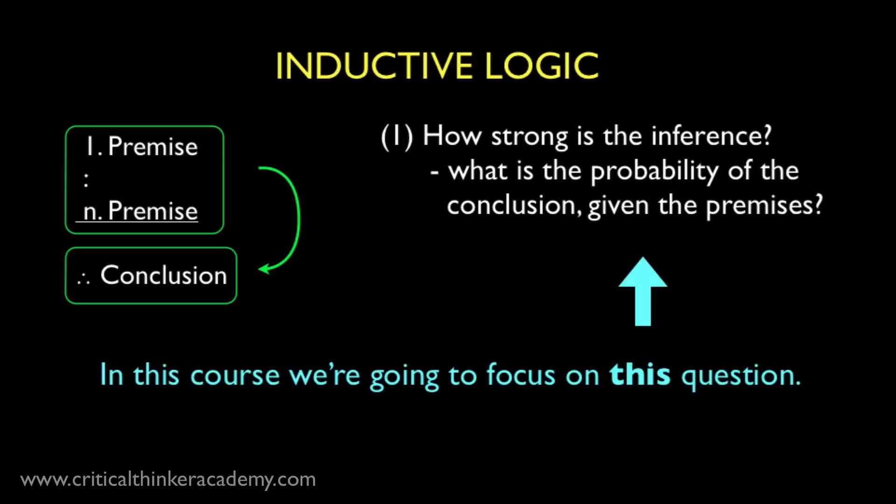In this course, we're going to stick with the first question and look at how probability theory and different interpretations of the probability concept can be used to assign probabilities to individual claims and to logical inferences between claims. With this under our belt, we'll then be in a good position to understand the material on probabilistic fallacies and probability blindness, which is really, really important from a critical thinking standpoint.